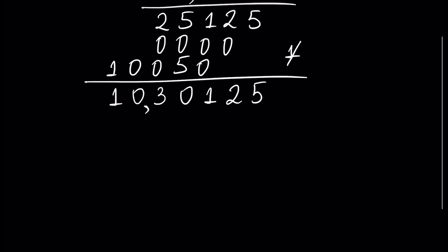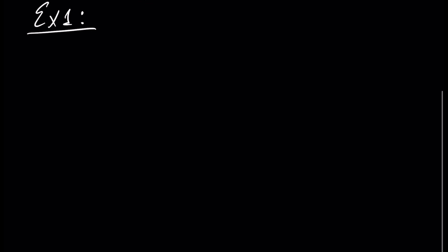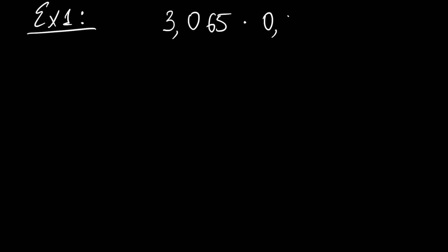So let's begin with an example. Example number one: let's multiply the number 3.065 by the number 0.5. Let's rewrite it: 3.065 times 0.5.